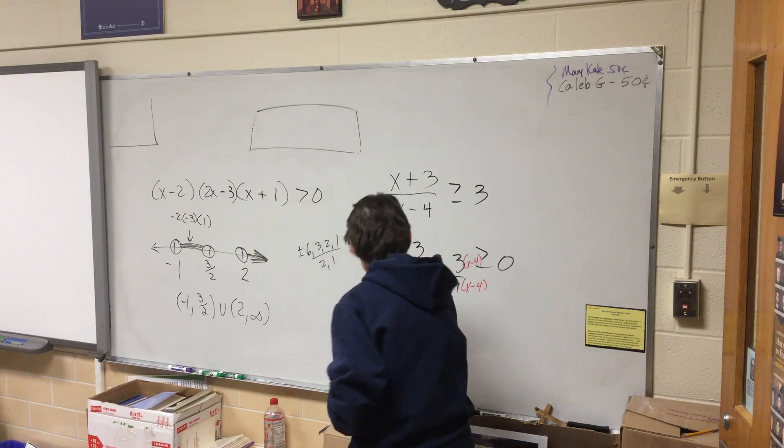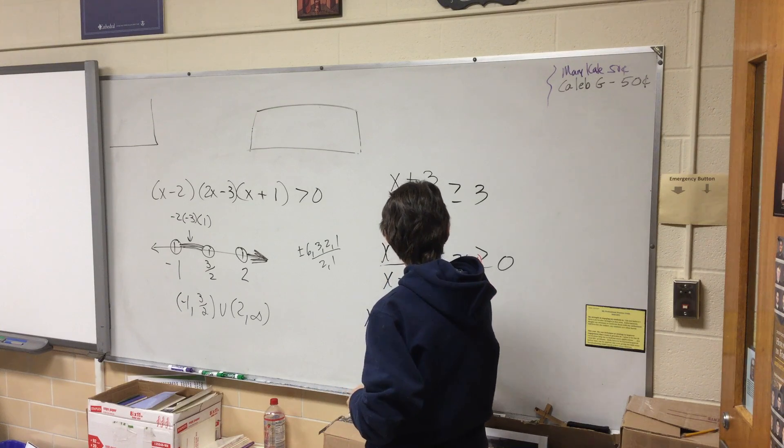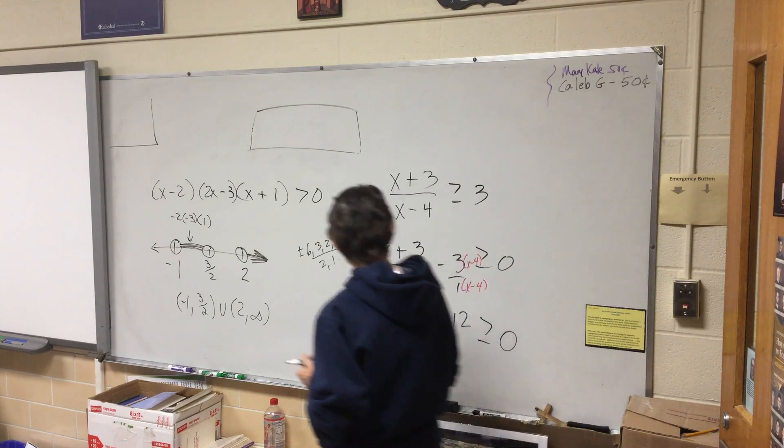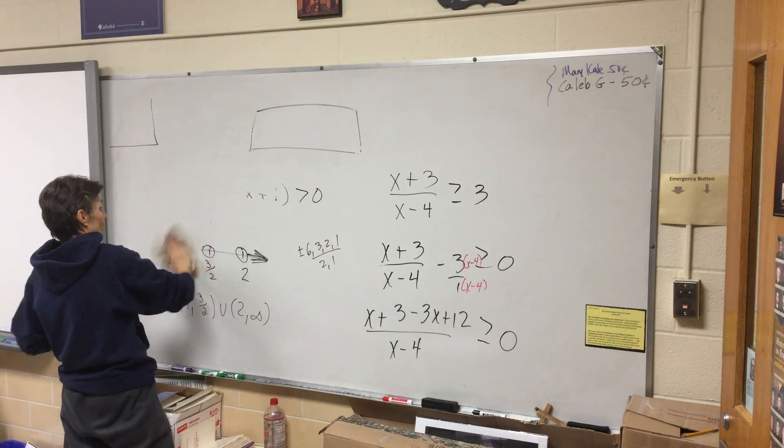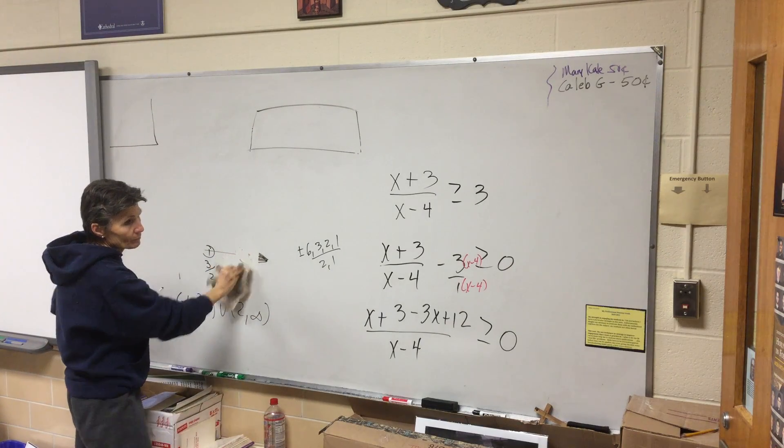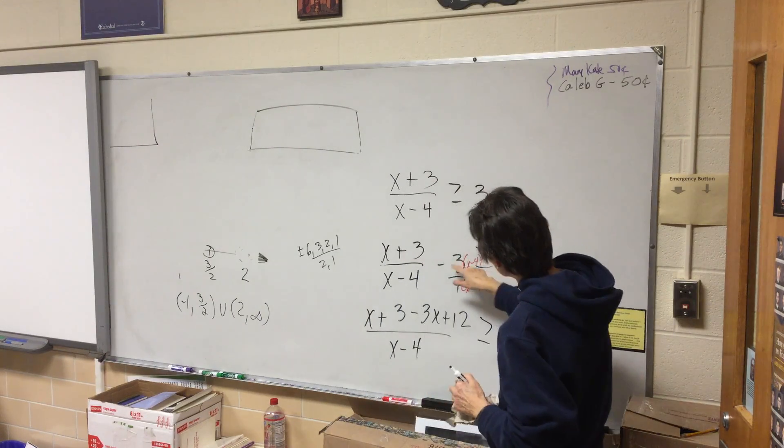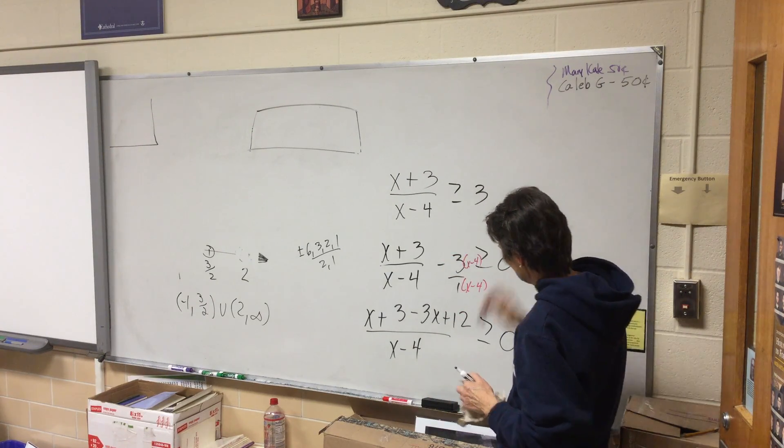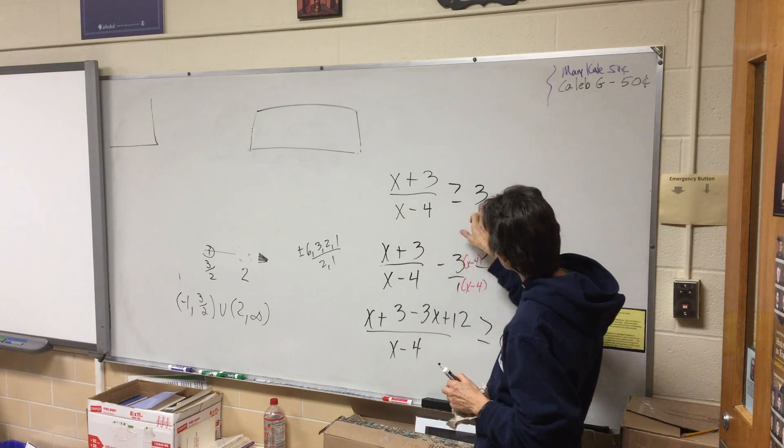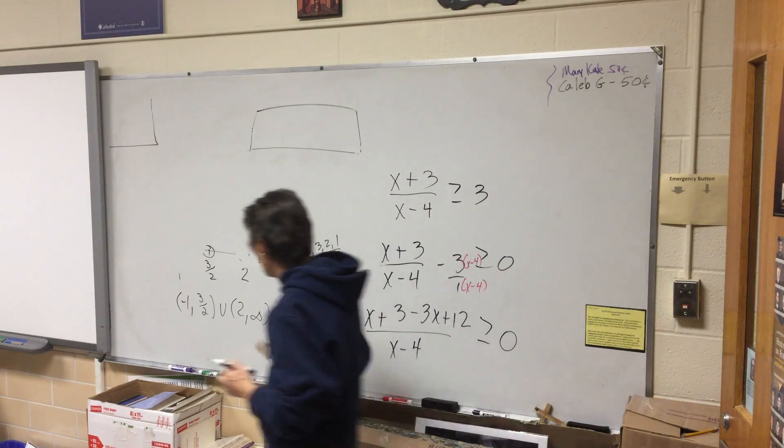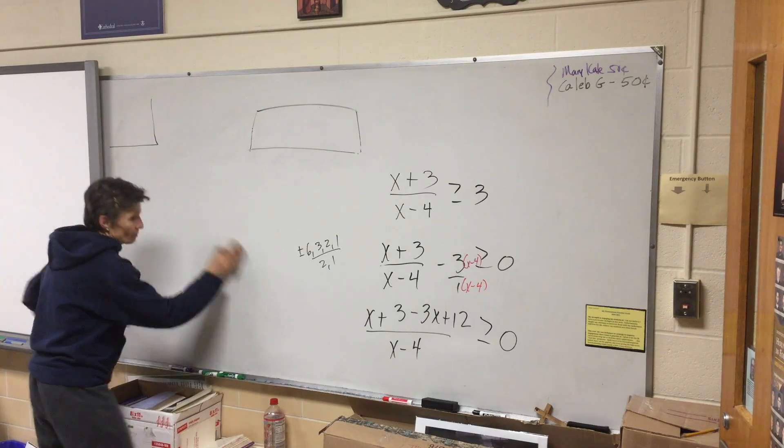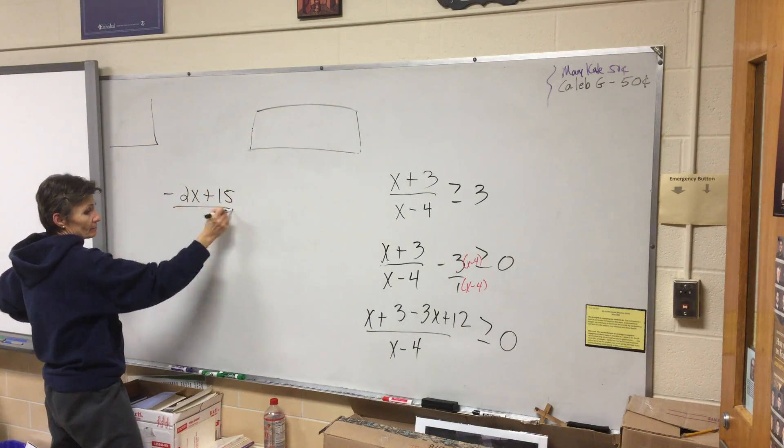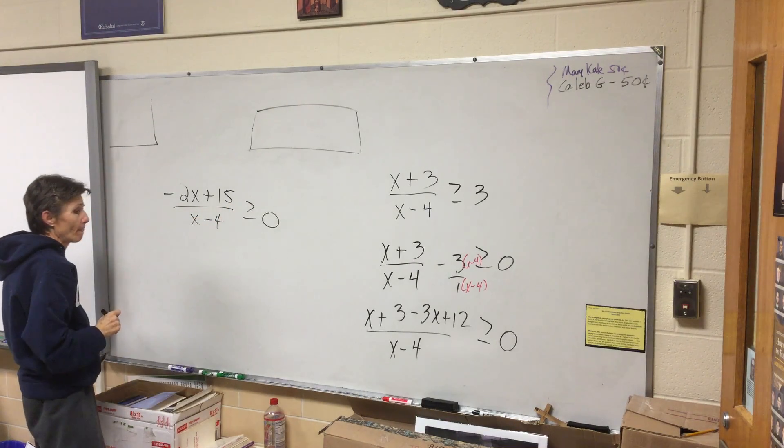Let me catch up. So x minus four is the denominator. x plus three minus three x plus twelve. I'm getting negative two x plus fifteen. I got minus nine. When you distribute, it's really tricky. You've got to be real careful with your distributive. This is almost always going to be a minus because you've subtracted that number over. So I have negative two x plus fifteen.